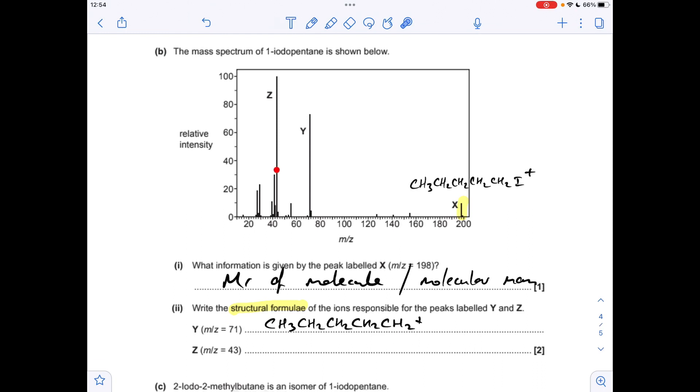What's caused the peak at Z? So that's got an M over Z of 43, so that's due to this ion here. Obviously the fragmentation has happened between these two carbons.